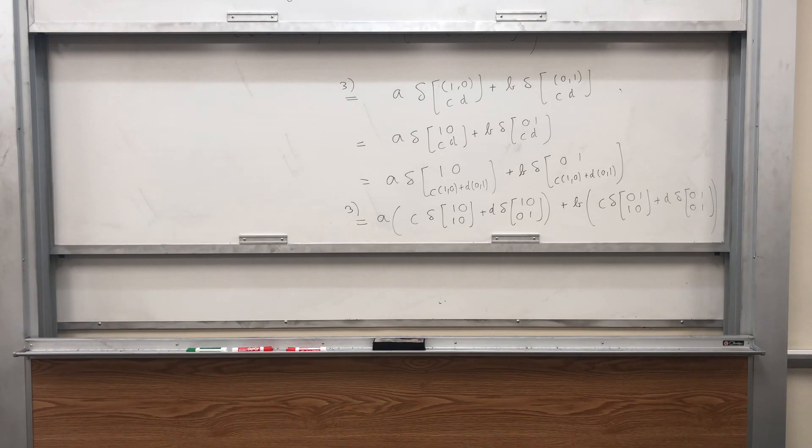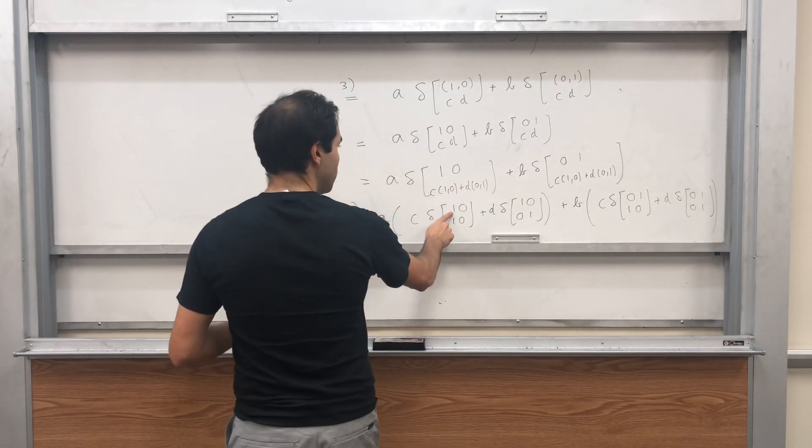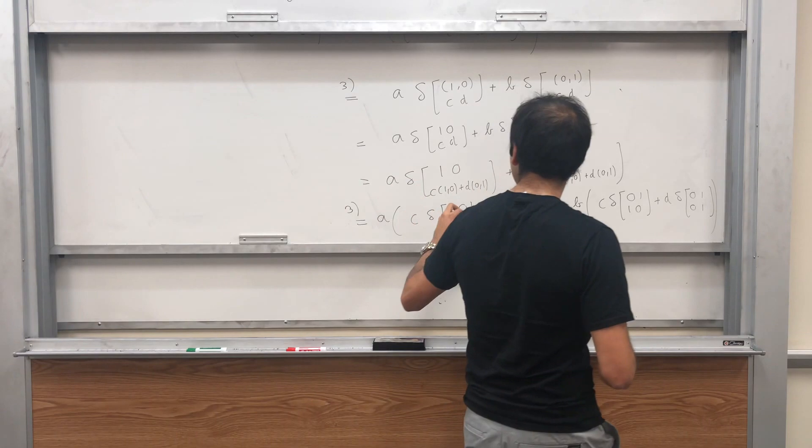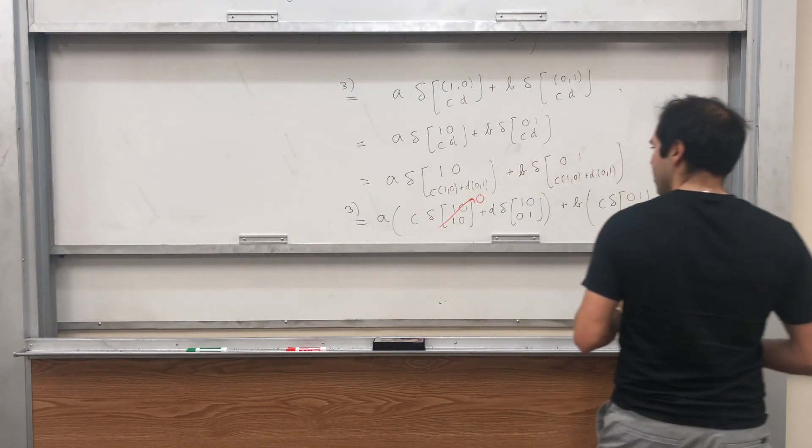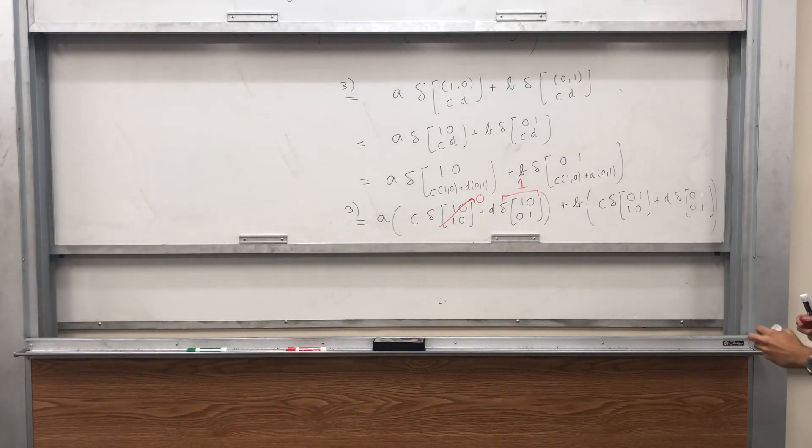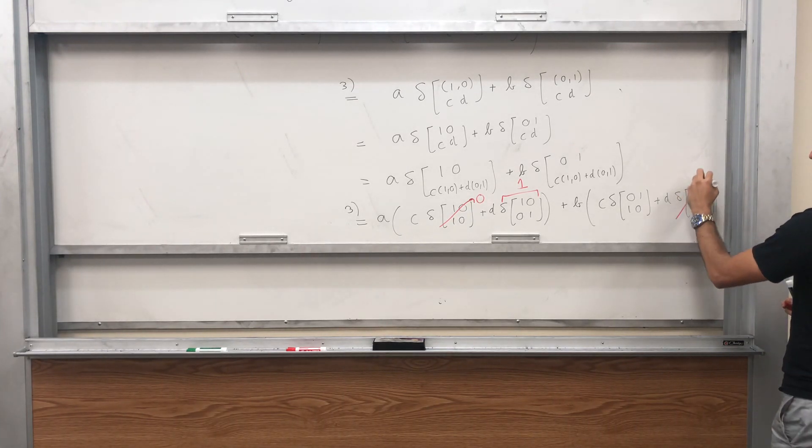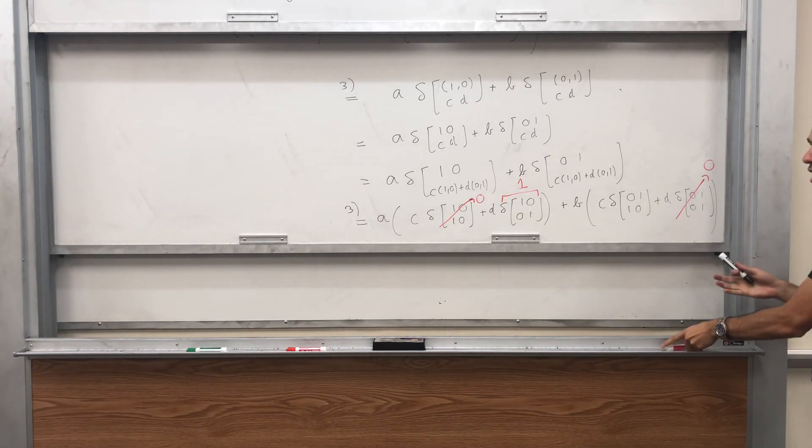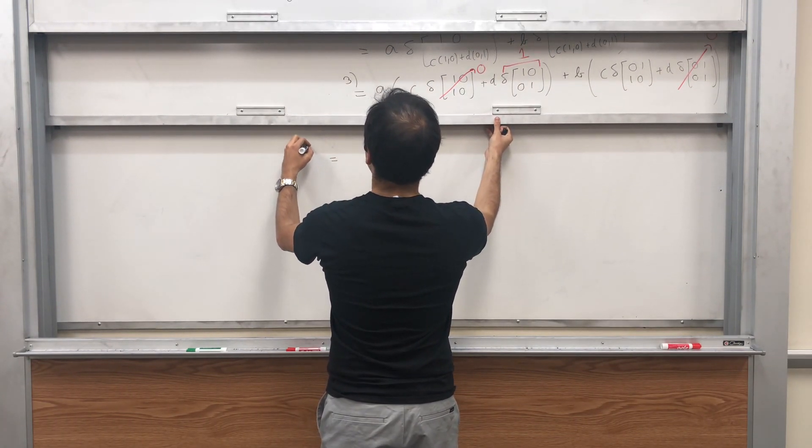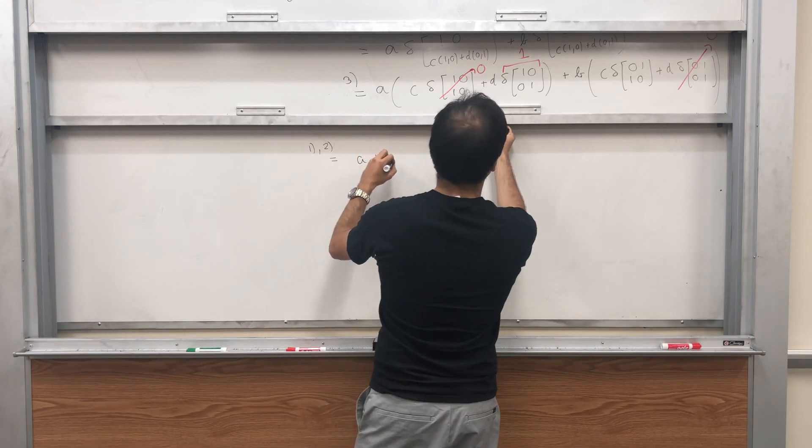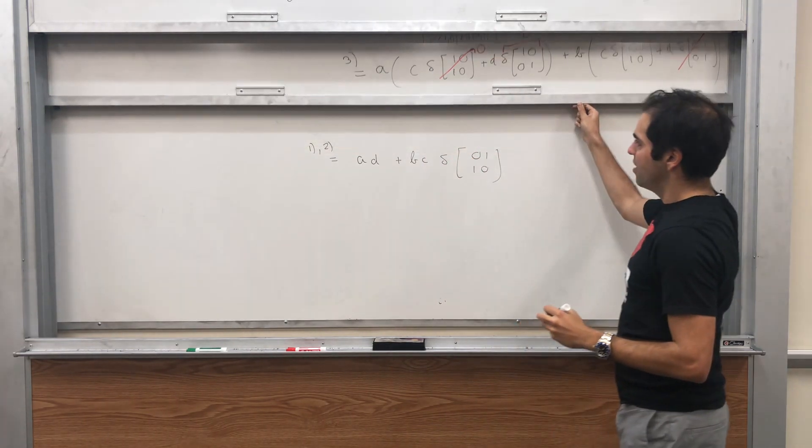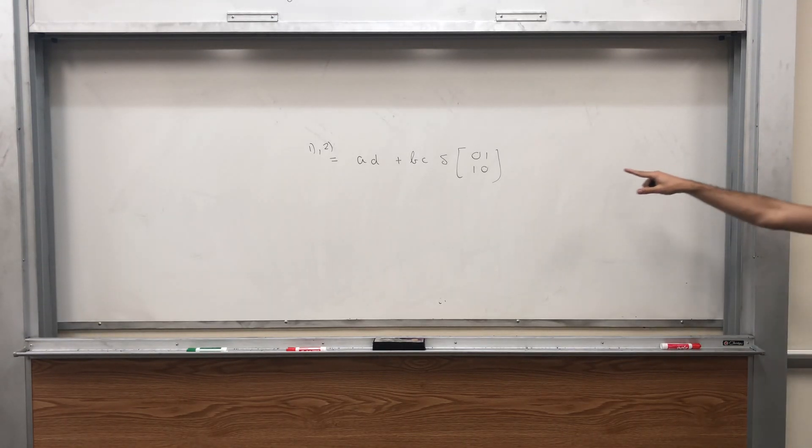It looks horrible, but it's not too bad, because what do we know? Notice, those two rows are identical, so by property 2, we know this thing is 0. Moreover, this is delta at the identity, which we know is 1, and also here we have two identical rows, so this is 0. What we're left with, by properties 1 and 2, is AD plus BC times delta of 0, 1, 1, 0.